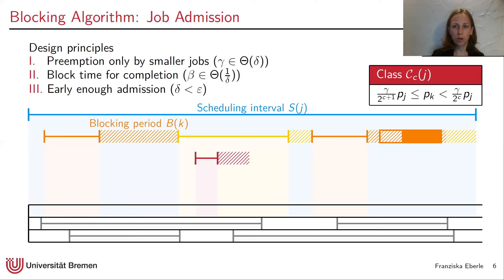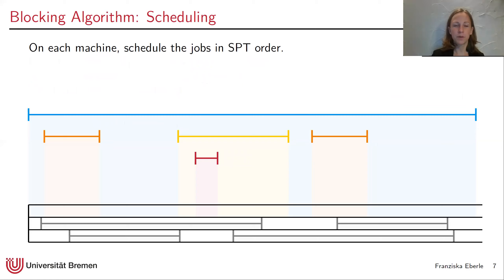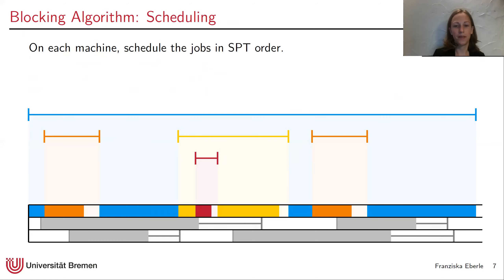Now that we have decided which jobs to admit to which machine, how do we schedule them? This is straightforward: on each machine we schedule jobs in SPT (shortest processing time) order. More precisely, we only schedule a job if it is the currently shortest job such that the time belongs to its scheduling interval. That is why we have gaps, which standard SPT would not produce.